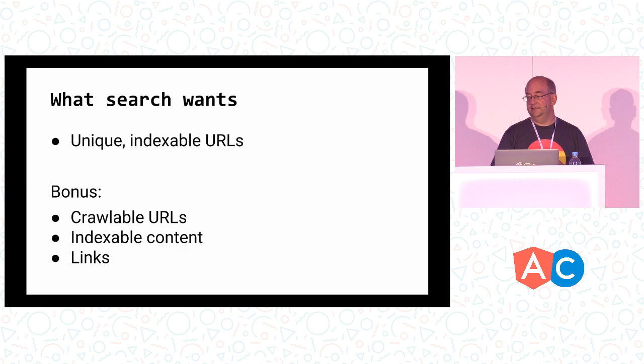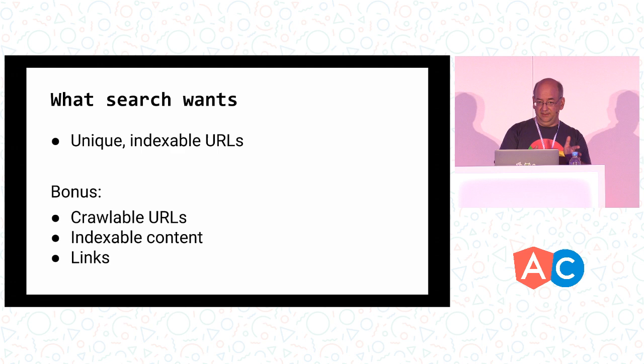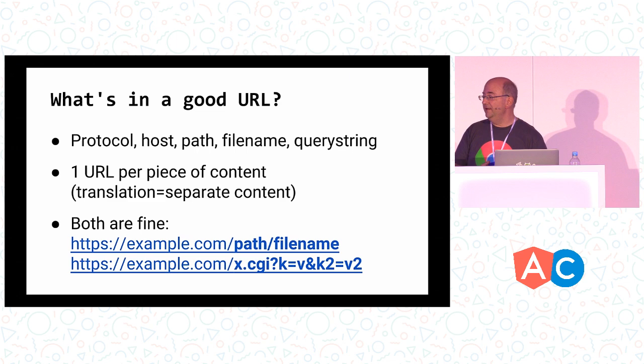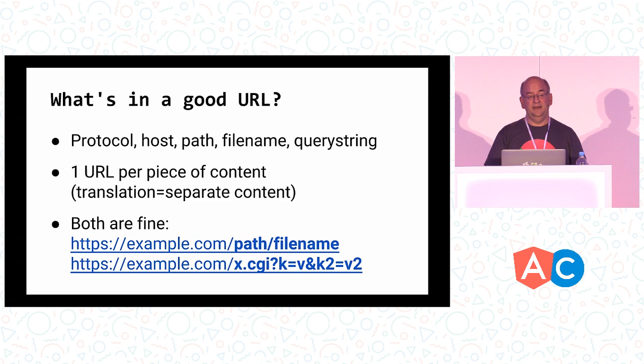Links in particular are really important for Google because that's how we discover the rest of your website or web app. We start with your home page, see all the links on the page, and try to follow those to individual pieces of content. One thing I see as problematic with a lot of single-page apps, including some Angular apps, is not understanding what's a good URL versus a bad URL for Google.